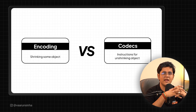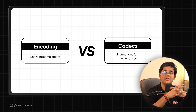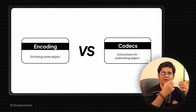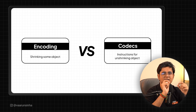While describing those differences, I did throw two big words around: encoding and codecs. Encoding, sort of in a layman's language, means to shrink something down. And codecs are instructions on how to unshrink those files. Now, with these basics out of the way, let's go on and see how we can do this in Django.